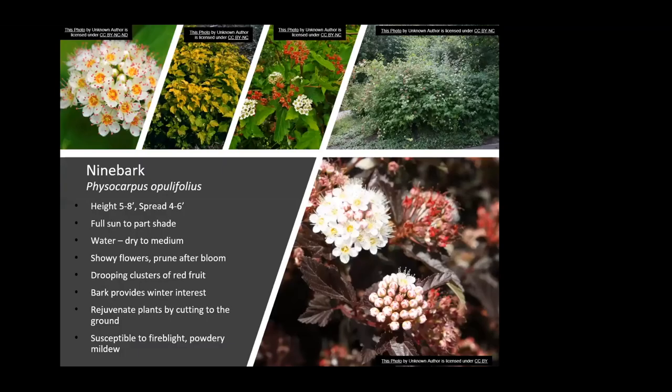Ninebark is another interesting one — about five to eight feet tall with a spread of four to six feet, takes full sun to part shade, has showy flowers, drooping clusters of red fruit that are really pretty, and the bark is interesting in the winter providing another season of interest. You can rejuvenate these plants by cutting them all the way back to the ground. They are susceptible to fire blight and powdery mildew — if you have apple trees nearby, that would be something to definitely look into.